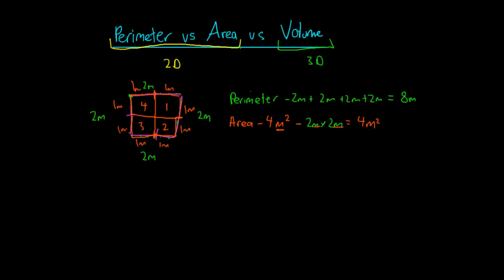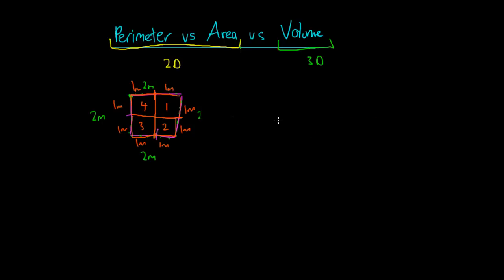So that's perimeter and area — they deal in two dimensions, so there's only a length and a height, but no depth. Now we're going to look at volume. The square on the left is in two dimensions and that was for perimeter and area. If we look now at a cube, we can demonstrate what volume is.